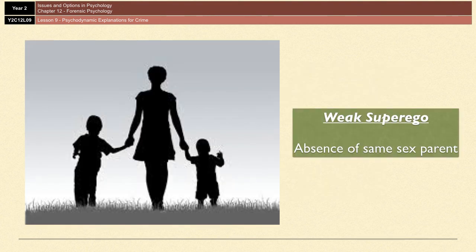Having a weak superego comes from the same-sex parent being absent during the phallic stage. If the same-sex parent is absent during that stage when the superego is starting to develop, then the child is not able to fully internalize the morals and values from that same-sex parent. If they can't do that, they're lacking in identification and so unable to fully internalize what is right and what is wrong.